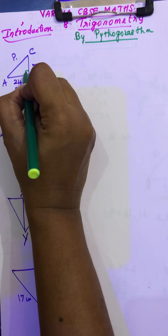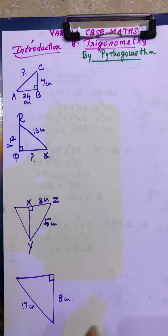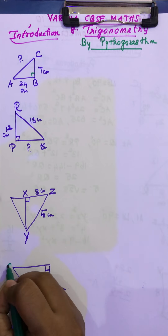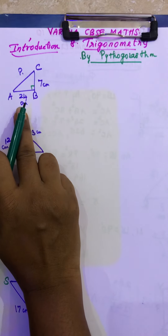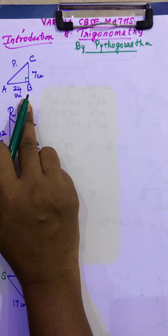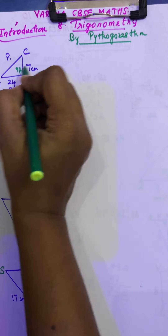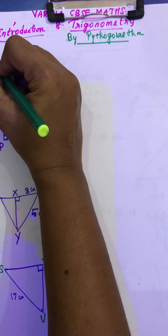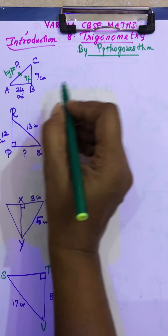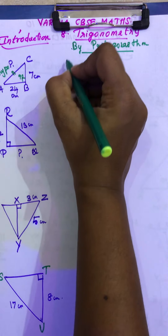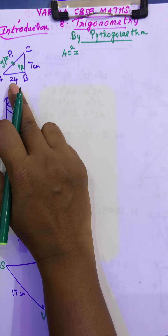See, this is the right angle triangle. Where is your 90 degree? In B — your 90 degree is at B. Here it is at X. The other triangles are given by S, T, E, U. In this triangle, what is your hypotenuse? What is meant by hypotenuse? The longest side in the right angle triangle, which is opposite to 90 degrees. So this is 90 degrees, this is the opposite side — this is your hypotenuse. This hypotenuse is not given, so we are going to find it. By theorem — hypotenuse squared equals the sum of the squares of the other two sides, so AC² = AB² + BC².